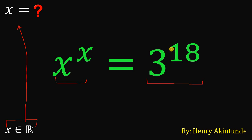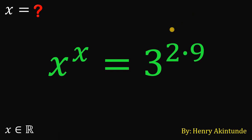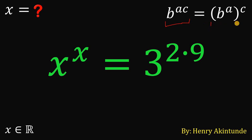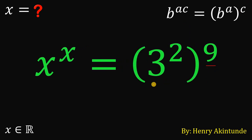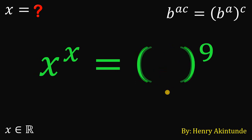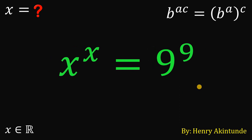To answer this question, we take note that 18 must be equal to 2 times 9. Using the law of exponents, b raised to the power of a times c can be written as b raised to the power of a, raised to the power of c. So the right-hand side, 3 raised to the power of 2 times 9, can be written as 3 squared raised to the power of 9. Since 3 squared equals 9, the right-hand side becomes 9 raised to the power of 9.